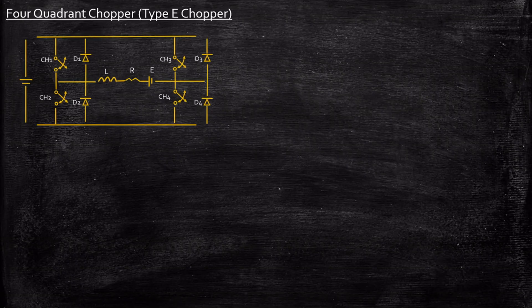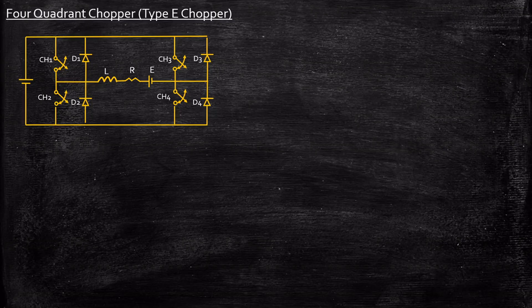Hello everyone. In this video we will be taking a look at the four quadrant chopper, which is also called a Type E chopper. This is a circuit diagram. We have four switches CH1 to CH4 and four diodes D1 to D4. We are considering an RLE load, which can also be an equivalent representation for a DC motor, or a battery with an internal resistance R connected in series with an inductor. We'll be considering various cases to understand how four quadrant operation is achieved using this circuit.